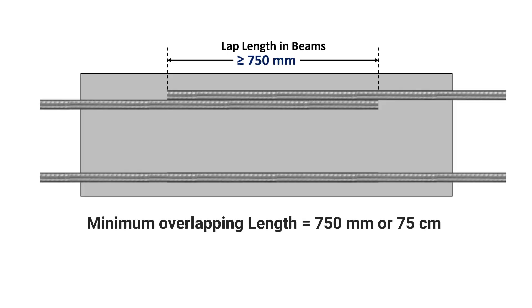The minimum overlapping length of bars in a beam shall always be provided at least equal to 75 cm or 750 mm. The purpose of overlapping is to transfer the loads from one bar to the next.